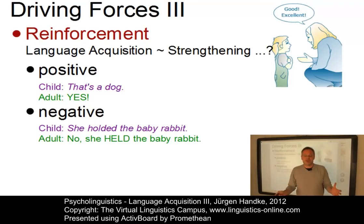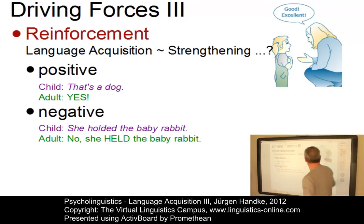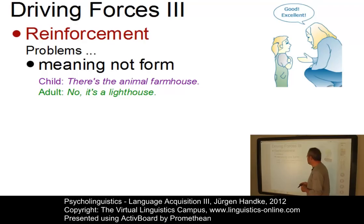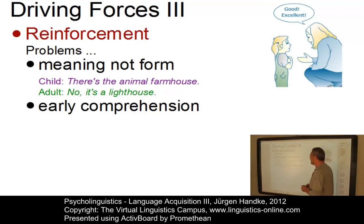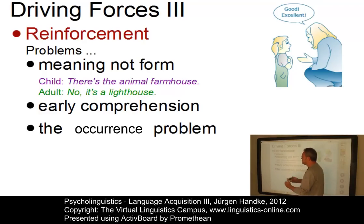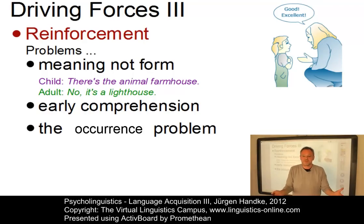Although this proposal has an appealing simplicity, there is much evidence against reinforcement as a central part of language development. For example, adults often correct the meaning and not the form — as in an example where a child uses 'animal farmhouse' instead of 'lighthouse.' There is also the problem of early comprehension: some utterances are understood before they are produced, so reinforcement doesn't apply. Additionally, only utterances that have been produced can be reinforced, so there is no account for why utterances should occur in the first place.